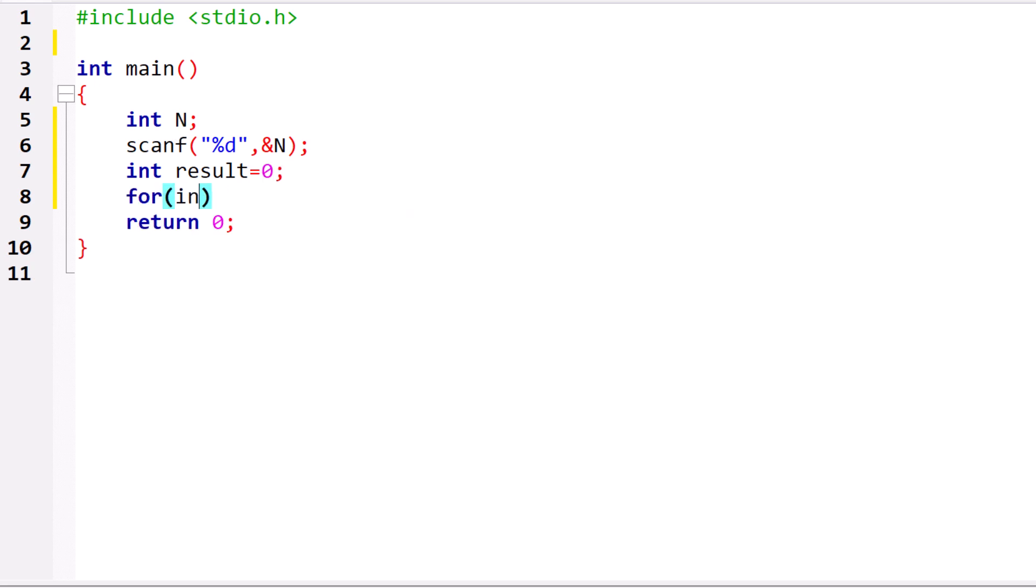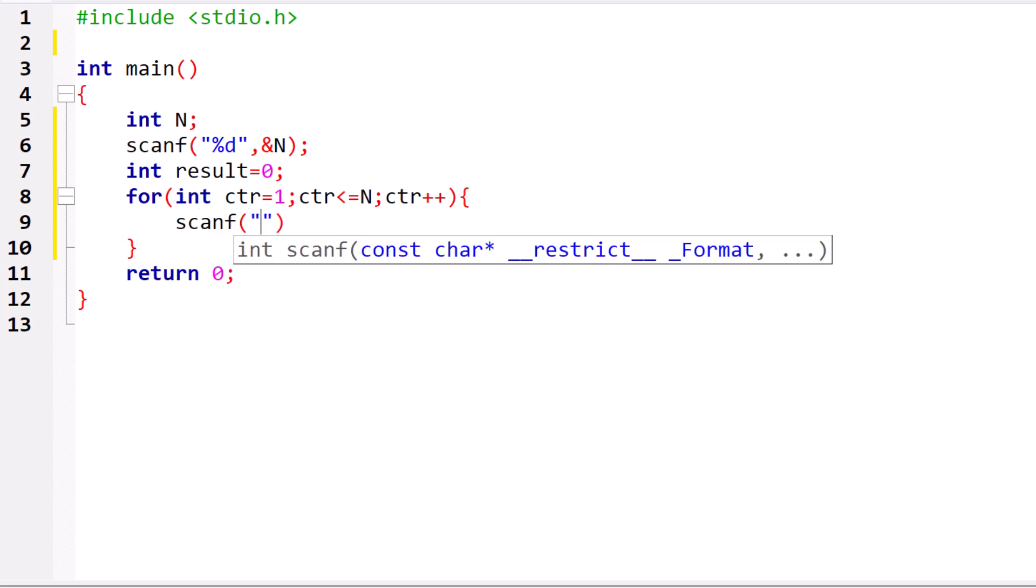Now we will have a loop. Int counter is equal to 1 counter less than or equal to N. The loop will be repeating for N times. You are going to accept an input value, %d. We will say current val. We will declare current val here.